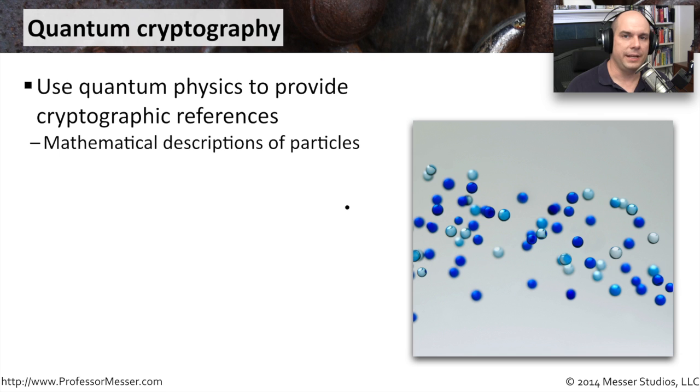Another emerging technology in cryptography is quantum cryptography. And like the name implies, this is using quantum physics and applying that into the calculations and methods of encryptions that we're doing inside of our cryptography. What we're doing is this mathematical movement of these particles is now being used as part of our encryption mechanisms.